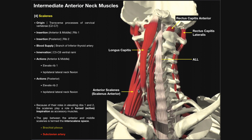Here are the anterior scalenes. The longus capitis covers up the origins a little bit, but the most lateral and superior fibers are visible. The anterior scalenes don't originate as high as the middle scalenes — they generally start at the transverse processes of C4, with additional origins at C5, C6, and C7. Like the middle scalenes, the anterior scalenes also insert on the first rib.